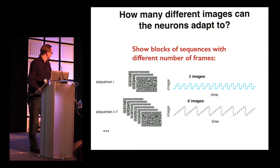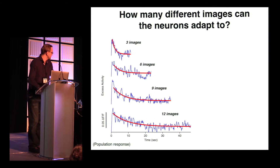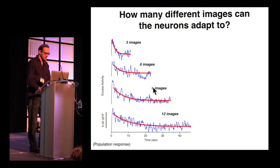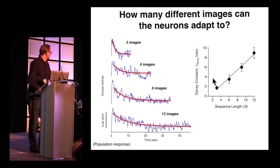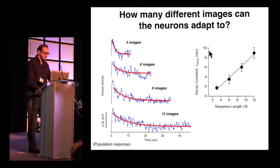We then asked how many different images a neuron can adapt to. We showed blocks of sequences with different numbers of frames, picking a different sequence each time, going up to 12 images. After a few repeats, activity decreased similarly for 12 images as for 3 images, showing that neurons can adapt to quite a lot of images. Plotting sequence length against the decay constant of the exponential, we see a nice linear relationship, implying that the adaptation dynamics are invariant to sequence length — it takes about the same number of presentations for adaptation regardless of sequence length.